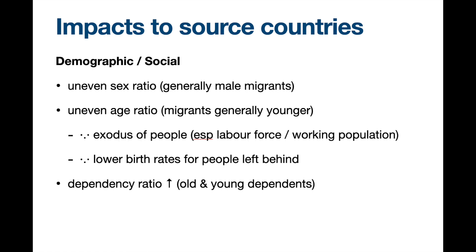Regarding the age ratio, younger people tend to migrate — usually men, but not always. So countries of origin are left with more older people and very young people, perhaps under 20 years old. These groups are less productive or not productive at all — they're called dependents, meaning they don't earn money themselves and must depend on the economically active population.